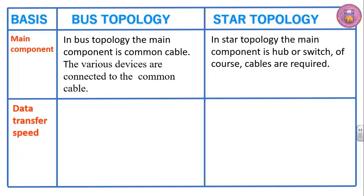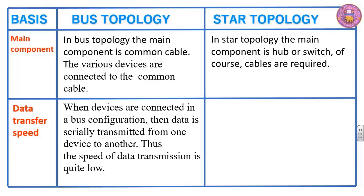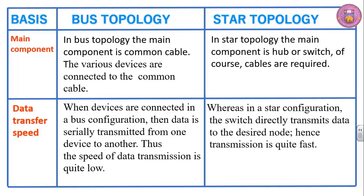Data transfer speed. When devices are connected in a bus configuration, data is serially transmitted from one device to another, so the speed of data transmission is quite low. Whereas in a star configuration the switch directly transmits data to the desired node, hence transmission is quite fast.